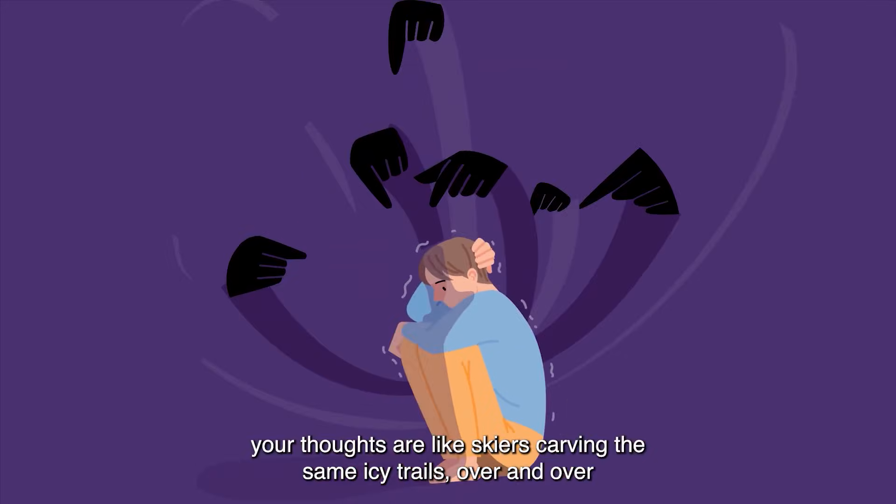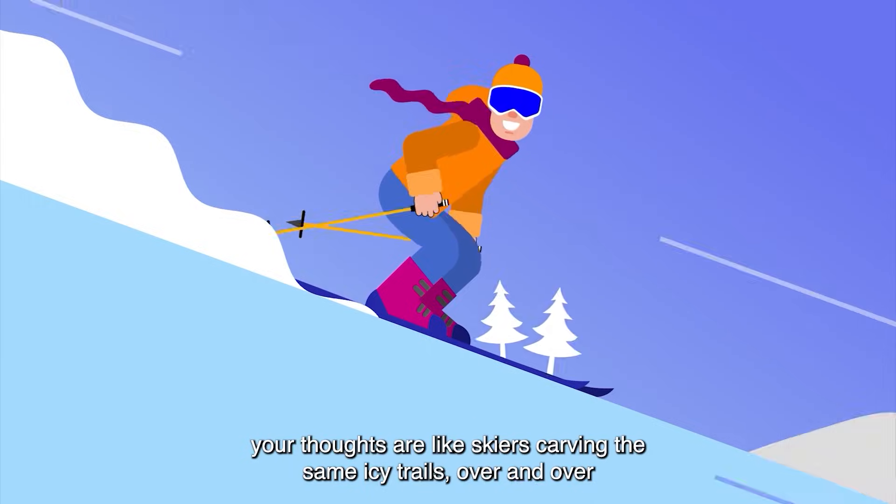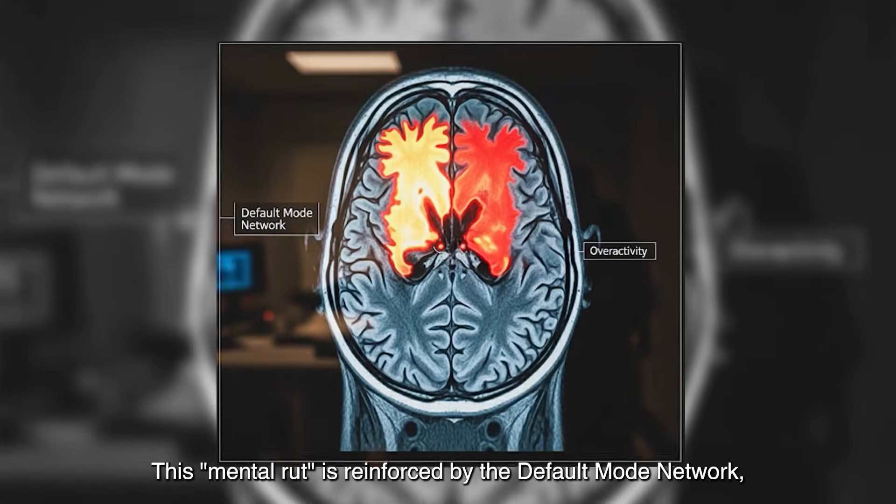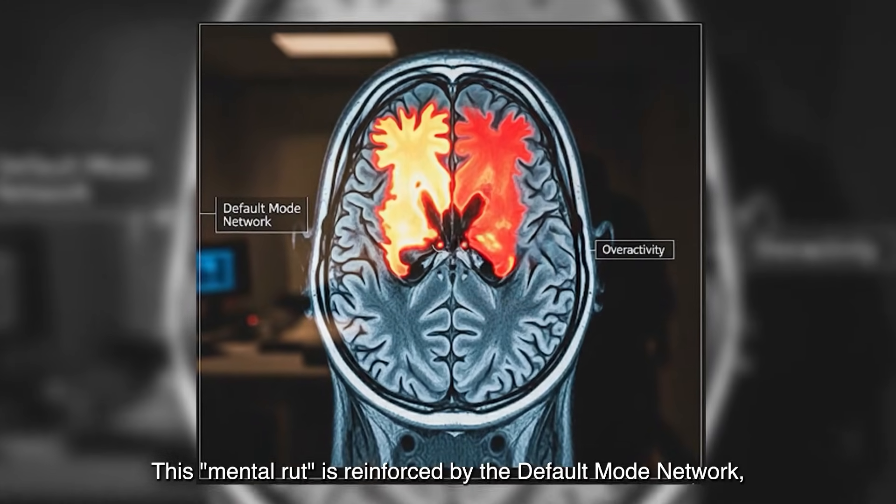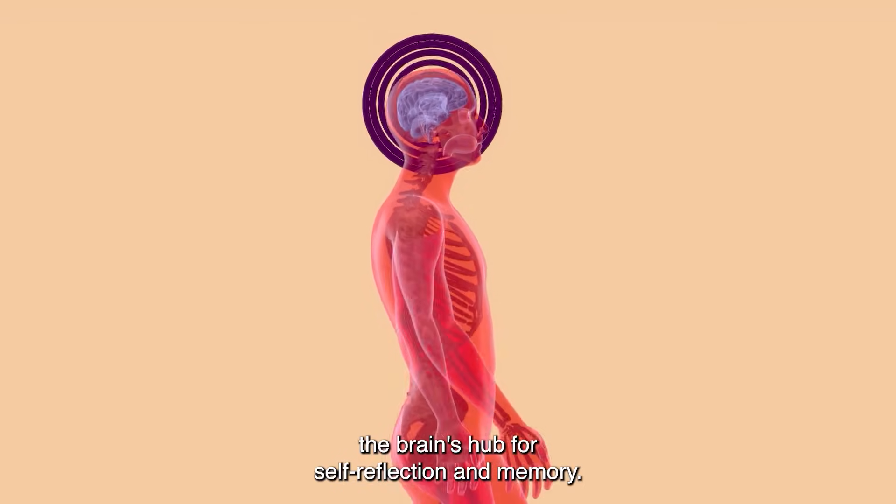Imagine severe depression. Your thoughts are like skiers carving the same icy trails over and over, unable to escape. This mental rut is reinforced by the default mode network, the brain's hub for self-reflection and memory.